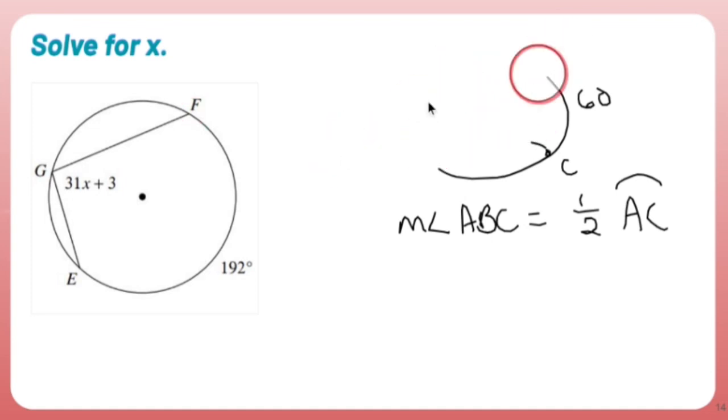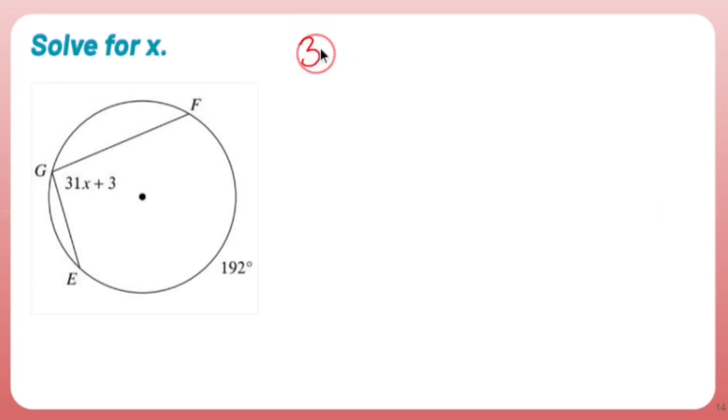So I made that really big. Now I have to get rid of it. I'm going to set up the equation 31x plus 3. 31x plus 3 is half of 192.